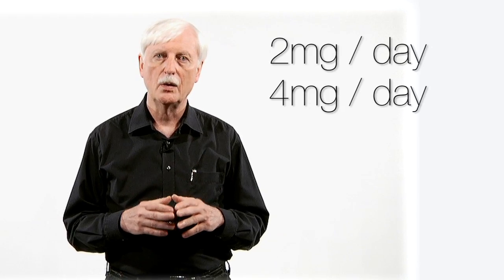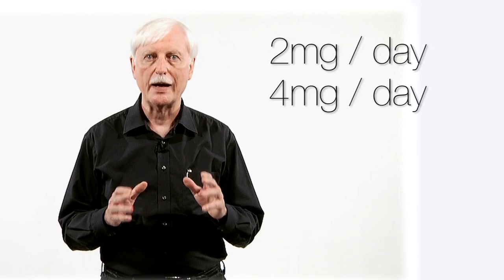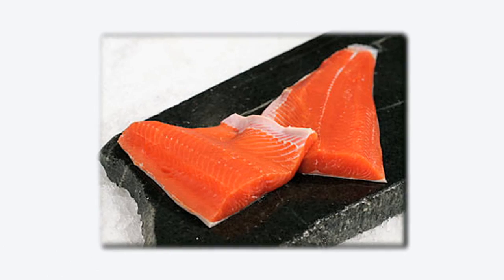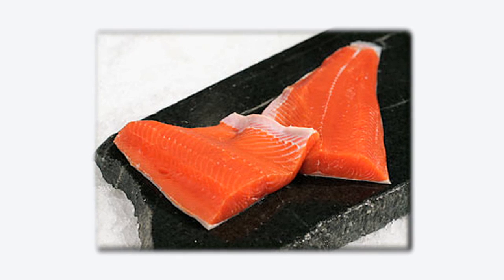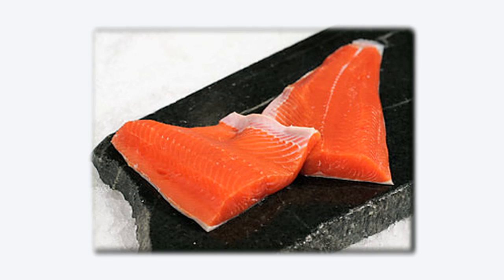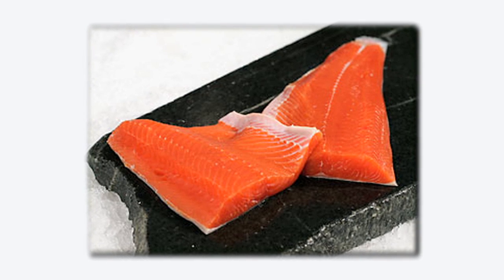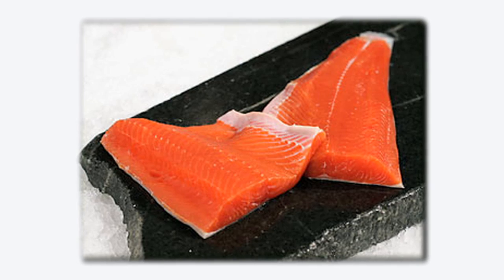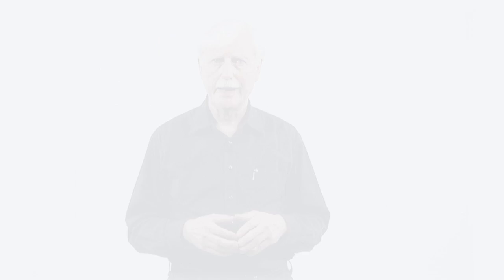Now, why is that? Well, first of all, there is some bioaccumulation of astaxanthin, that is well known. A salmon starts its life off being completely white on the inside. It only turns pink because of the food it eats, the shrimp and things like that it eats. It also eats microalgae that contains astaxanthin, and a white salmon is not going to make it to its spawning ground, whereas the one that's red will, because it improves its endurance, it improves the resistance to oxidative stress, et cetera.